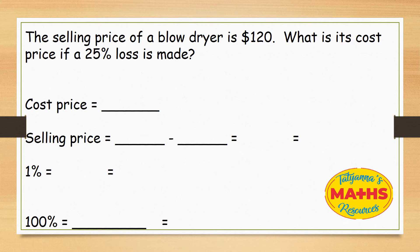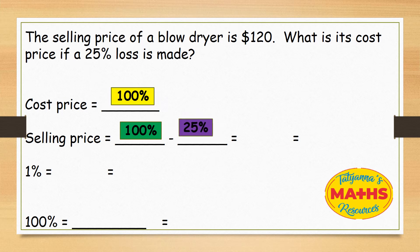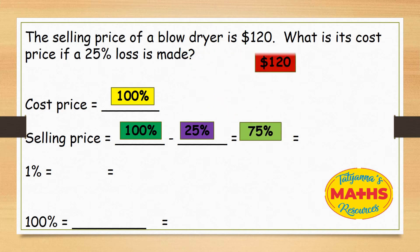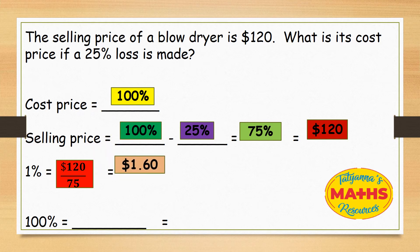The cost price is equal to 100%. The selling price in this case would be 100% subtract 25%, giving us 75%. So the selling price is 75%, which equals $120. Now we're going to find out what 1% is, so we take $120 and divide it by 75, giving us $1.60.